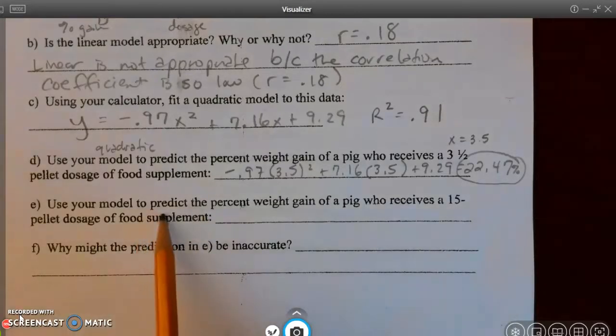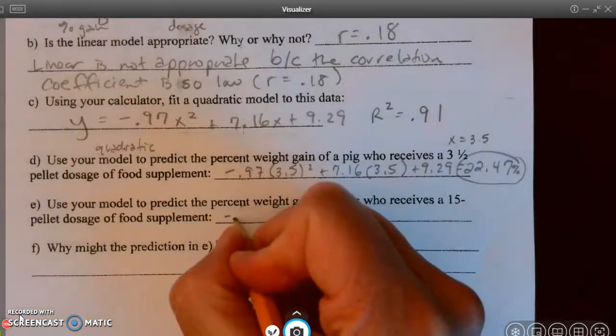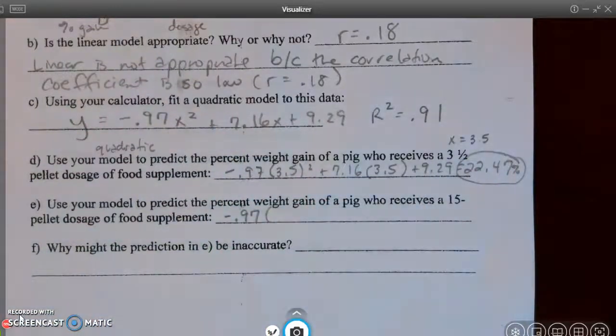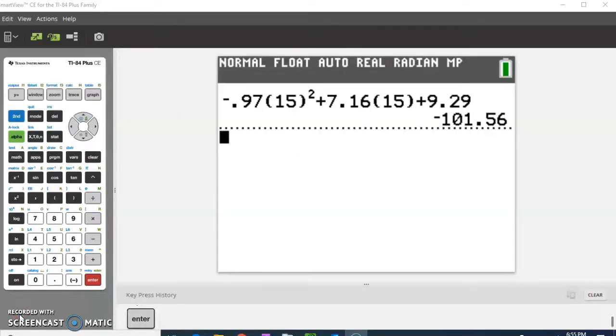Next, it says use your model. So we're going to use the same model to predict the percent weight gain of a pig who receives a 15 pellet dosage. So this time you're going to be substituting 15 and see what you get on your calculator. All right. So this time I put my 15 and I got negative 101.56.